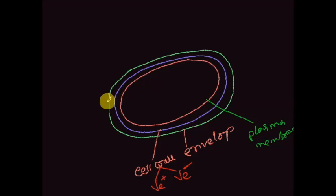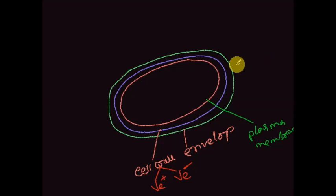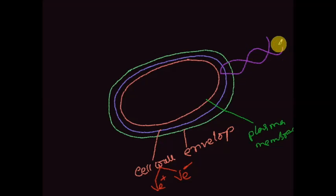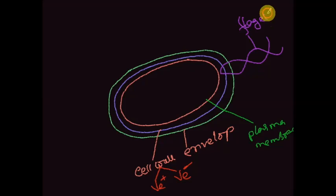These filamentous structures on the bacterial cell surface are called bacterial flagella. The flagellum helps the bacteria to move from one place to another.